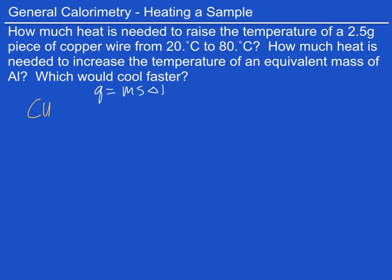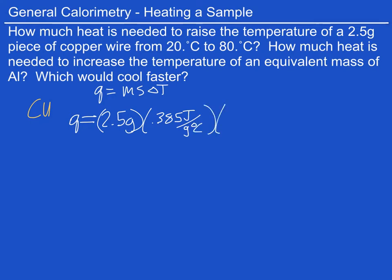So for the copper, Q is going to be set equal to the mass, 2.5 grams, times the specific heat and that is 0.385, and the units are joules per gram degree Celsius, times the delta T. And in this case it's going to be the final 80 degrees Celsius minus the initial 20 degrees Celsius. So it's 60 degrees Celsius.